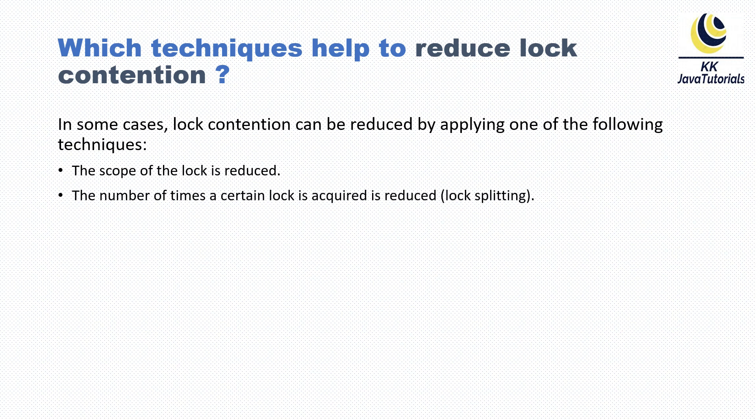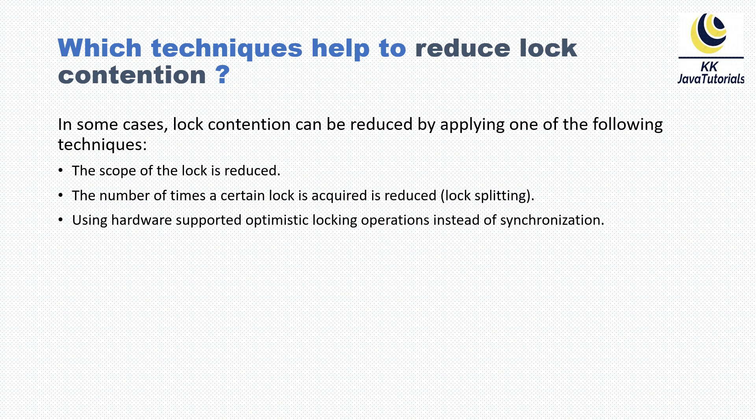The next technique is reducing the number of times a certain lock is acquired. For that, we have a concept called lock splitting. Based on this concept, instead of acquiring a single lock on one object, we can have multiple locks applied on different sections of that object. This is how ConcurrentHashMap is designed, providing thread safety without a single global lock.